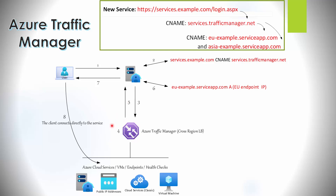Step four: once the Traffic Manager name servers receive the request, they choose an endpoint based on the routing method and the health state of the endpoints. Step five: that endpoint is returned as another DNS CNAME record — for example, eu-example.serviceapp.com or asia-example.serviceapp.com. Step six: the recursive DNS service finds the name servers for serviceapp.com and contacts them for the DNS record. Step seven: the DNS record containing the IP address of the actual service endpoint is returned, and the recursive DNS service returns the DNS response to the client.